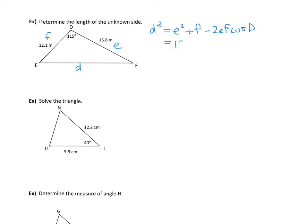15.8 squared plus 12.1 squared minus 2 times 15.8 times 12.1 times the cosine of 115 degrees.